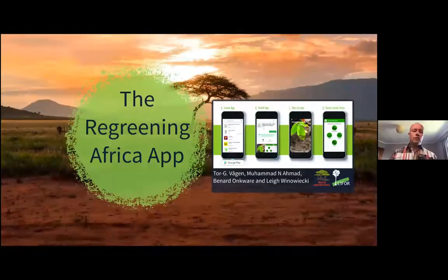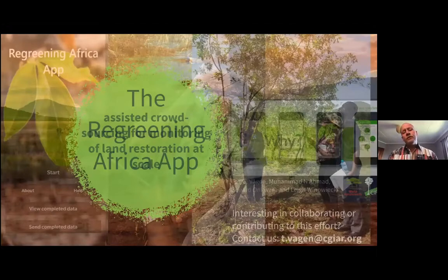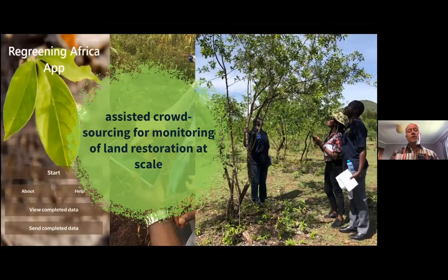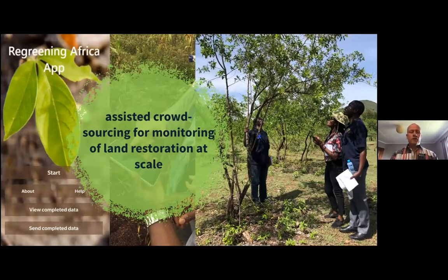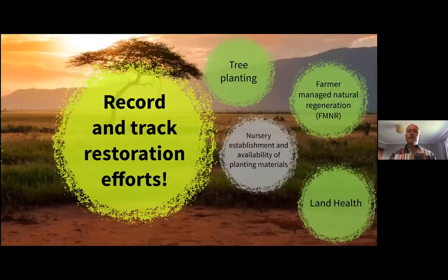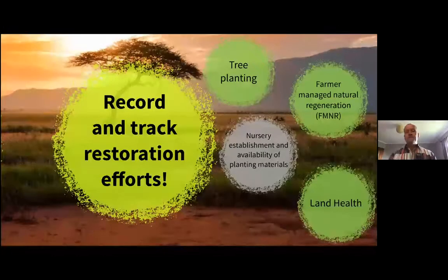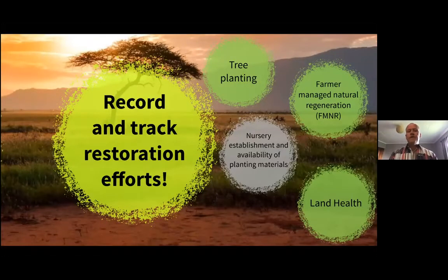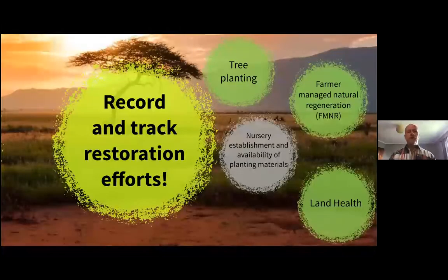For those on the whole call today, you probably heard Thomas Krauther talking about the bigger picture — that it's not only about planting trees but also about land restoration in general. That's really what I'm going to be talking about now: recording and tracking restoration efforts, which includes tree planting, farmer managed natural regeneration, and nursery establishment and availability of planting materials — those are the three modules in the app. I'll also be linking this to work on land health by overlaying app data onto maps of land health indicators.